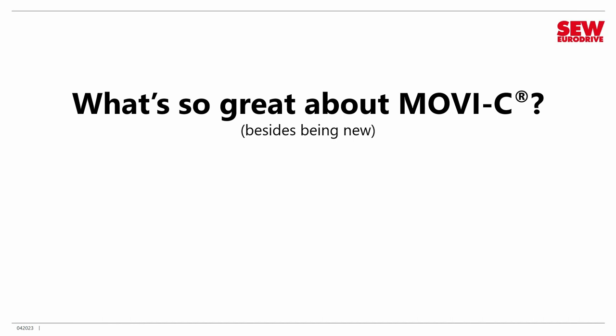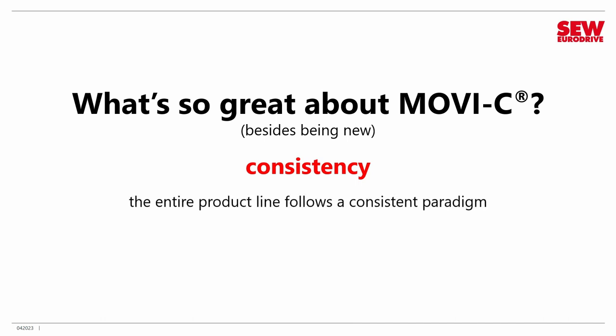If you're new to SEW, you might ask: what is so great about MoviC besides the fact that it's new? I can answer that with a single word: consistency. The MoviC product line, above all, is consistent. The entire product line, which includes many different components, follows a consistent design paradigm — a well-thought-through product line where you find consistency from one product to the next. When you get up to speed in one product, you'll be able to quickly transition to understanding other products in the MoviC line.